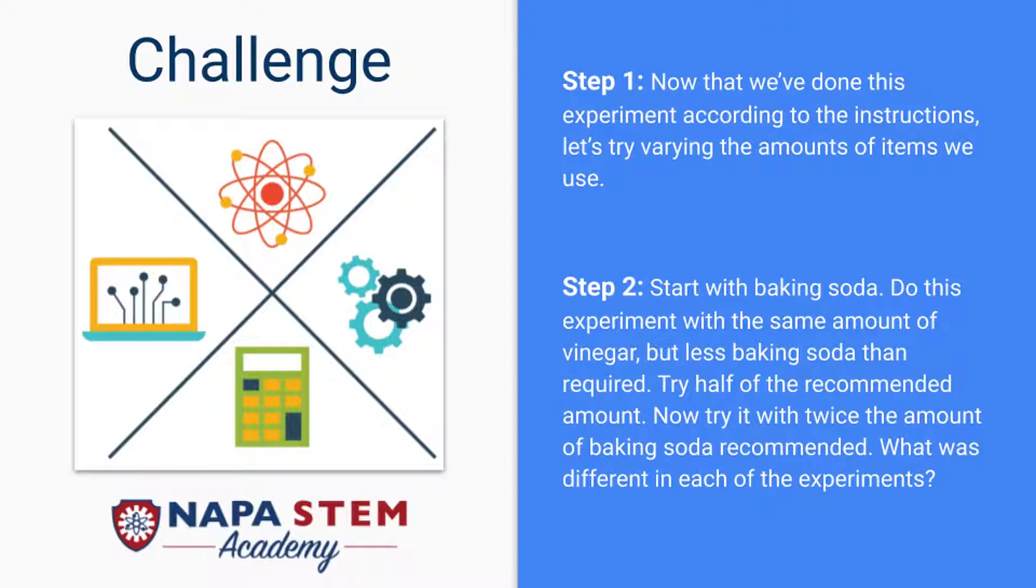Start with the baking soda. Do this experiment with the same amount of vinegar, but less baking soda than required. Try half the recommended amount. After you do that, try it with twice the amount of baking soda recommended. What was different in each of the experiments?